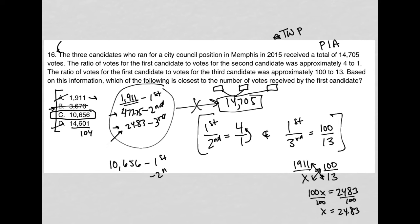The second candidate, again, because of this ratio, received one-fourth of that. So back to my calculator. That's 10,656 divided by 4. That is 2,664.